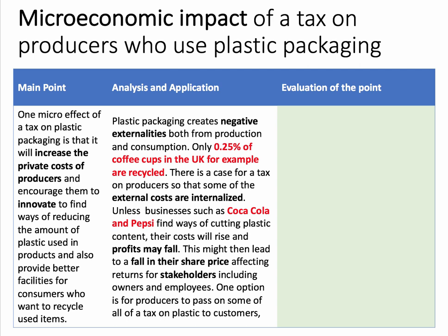The first micro impact — one clear micro effect of taxes on packaging is that it's going to increase the private cost of producers and hopefully encourage them to innovate, cut the amount of plastic they use, and perhaps provide better facilities for recycling. The analysis: plastic packaging creates negative externalities both from production and consumption. For application, only less than 1% of coffee cups in the UK are recycled. Use your contextual knowledge — there could be data in the extract to bring in here. Therefore, because of these externalities, there's a case for a tax so that external costs are internalized. Can you visualize the diagram showing external costs and marginal social costs lying above private costs? If so, this would be a great point in the essay to include a diagram.